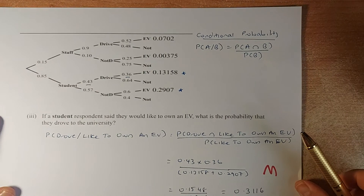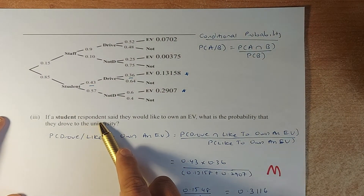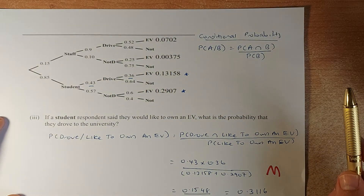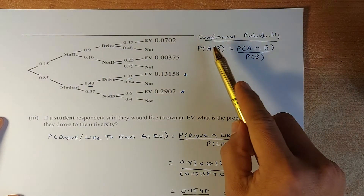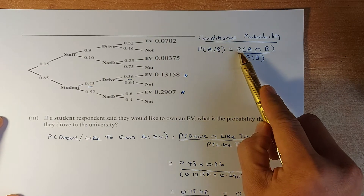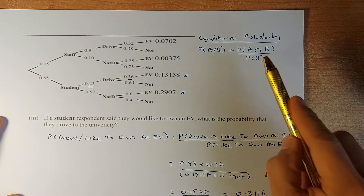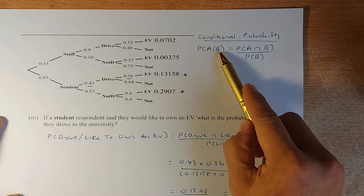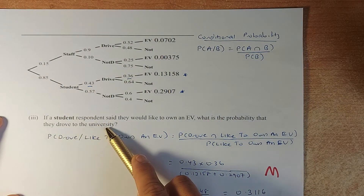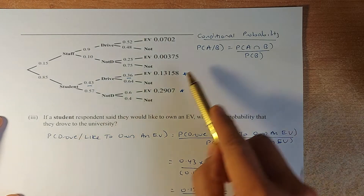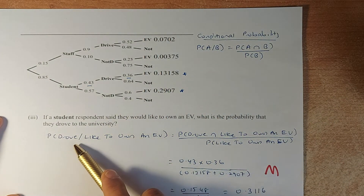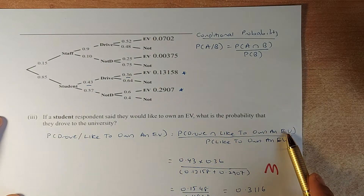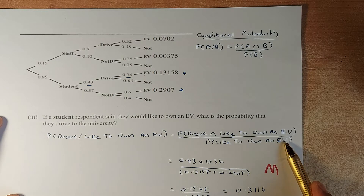Part 3 of question 1a. If the student respondent said they would like to own an EV, what is the probability that they drove to university? This is conditional probability. The formula is: probability of A given condition B equals probability of A and B divided by probability of B. In this case, the condition is that the student would like to own an EV, so B is like to own an EV, and A is drive. So it becomes probability of drive and like to own an EV, divided by probability of like to own an EV.